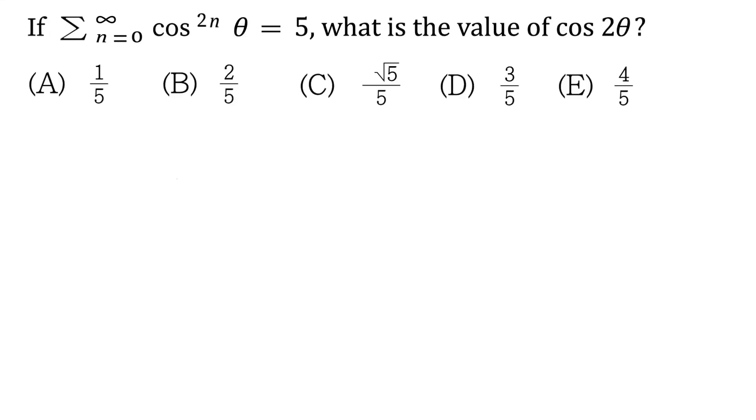If the sum from n equals 0 to infinity of cos theta to the power of 2n is equal to 5, what is the value of cos 2 theta?